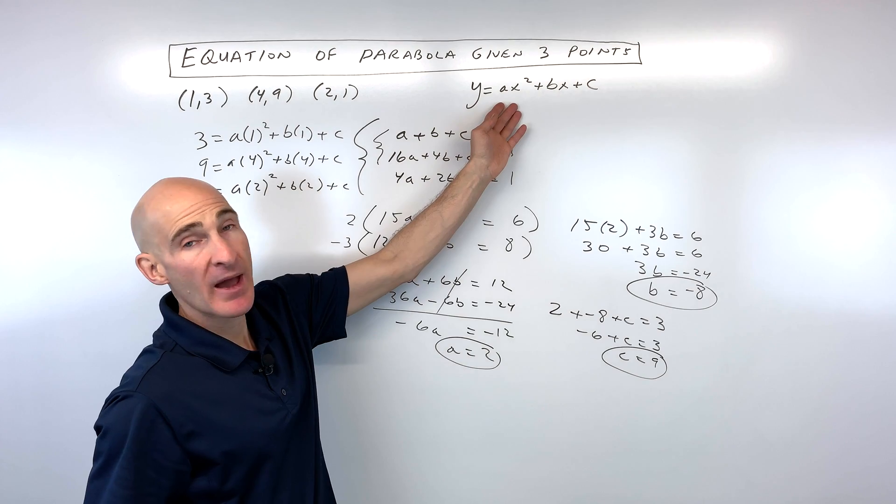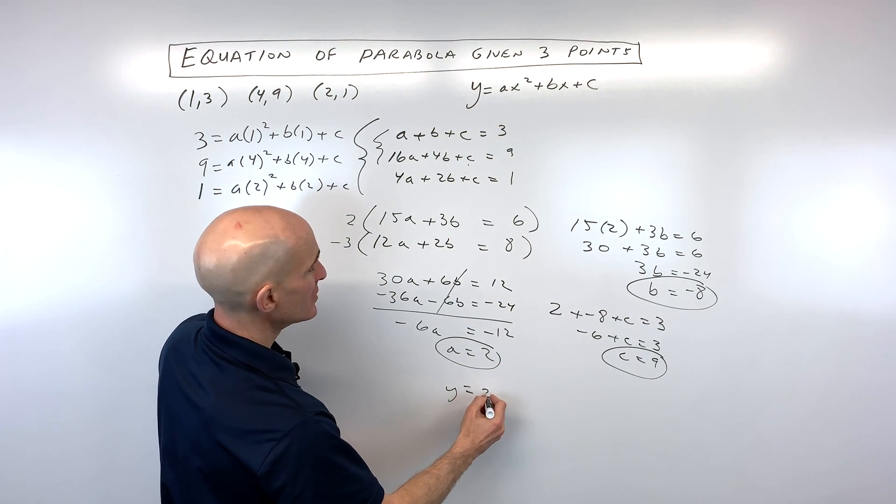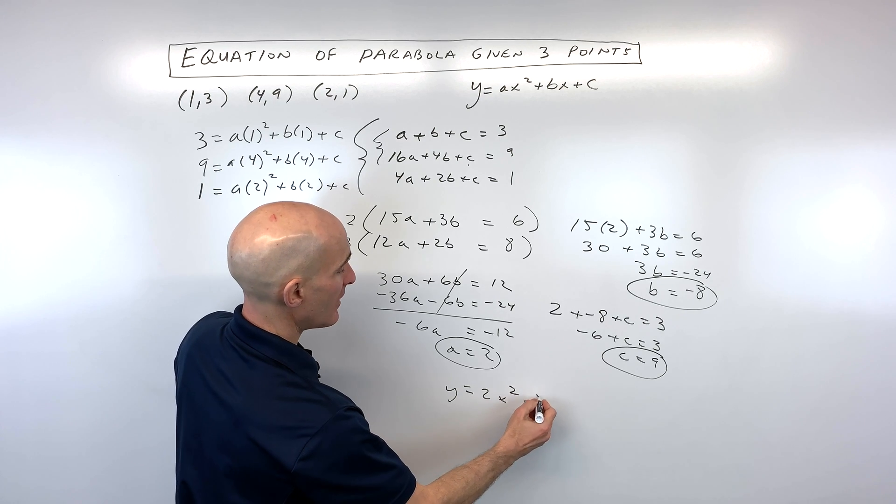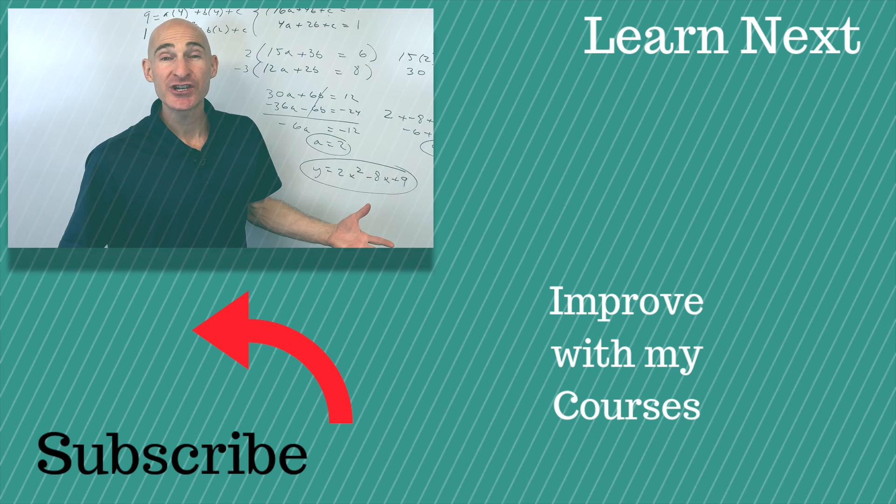Now all we have to do is put it back into our equation here for a, b, and c, and we've got it. So this is going to be y equals 2x squared minus 8x plus 9. And that's the equation of our parabola. Great job.